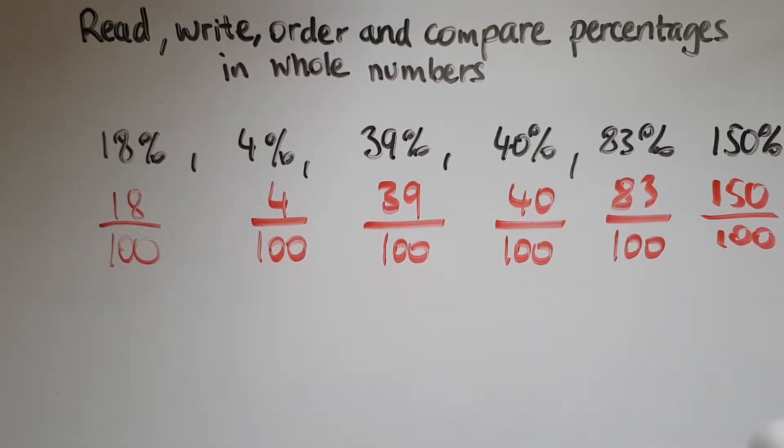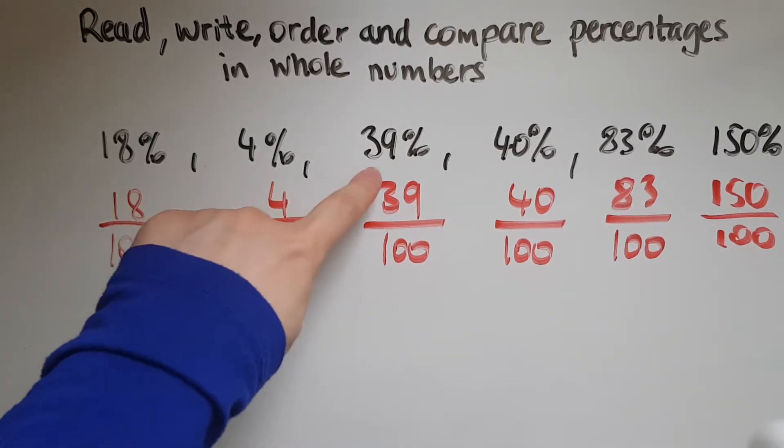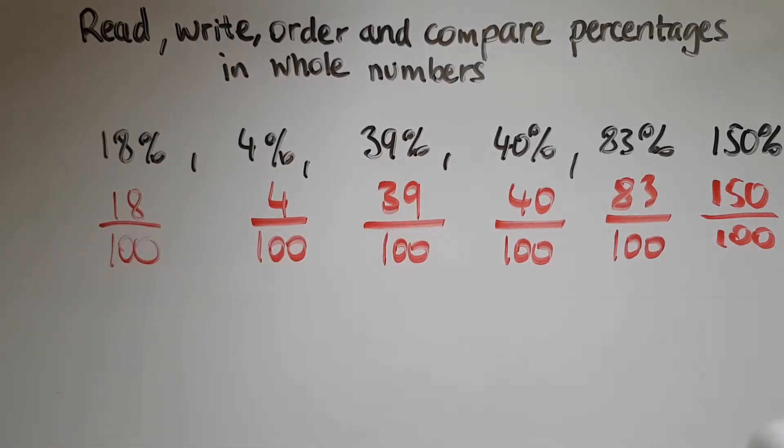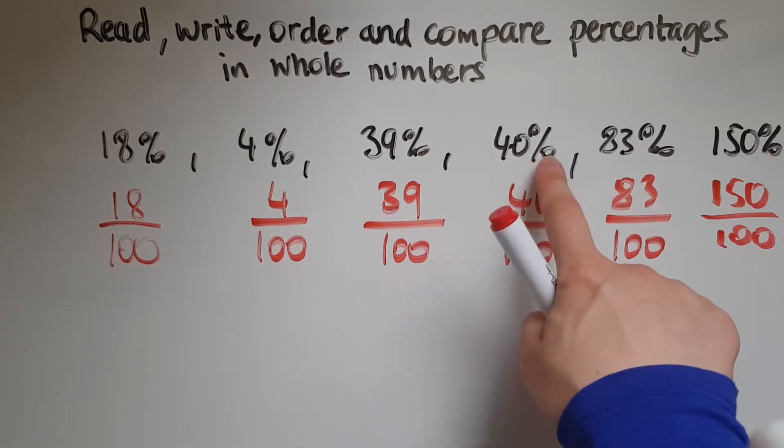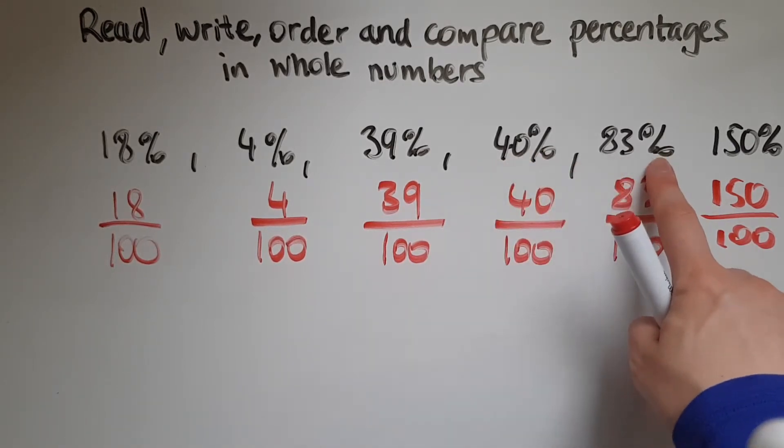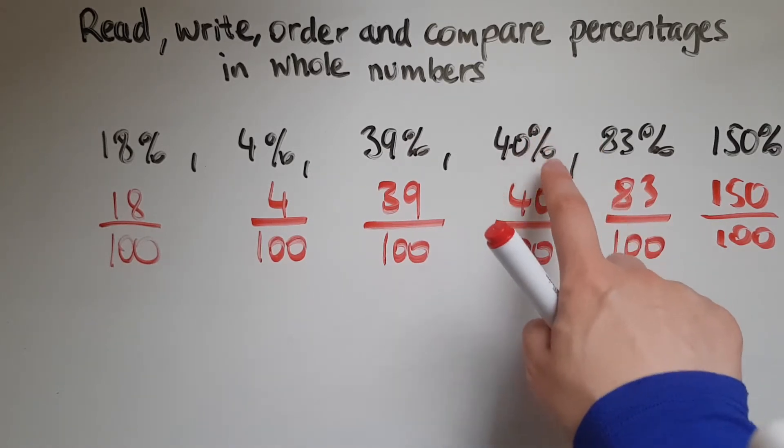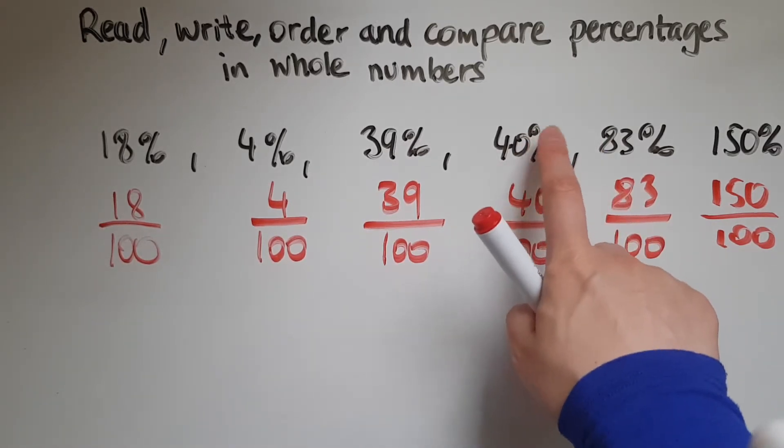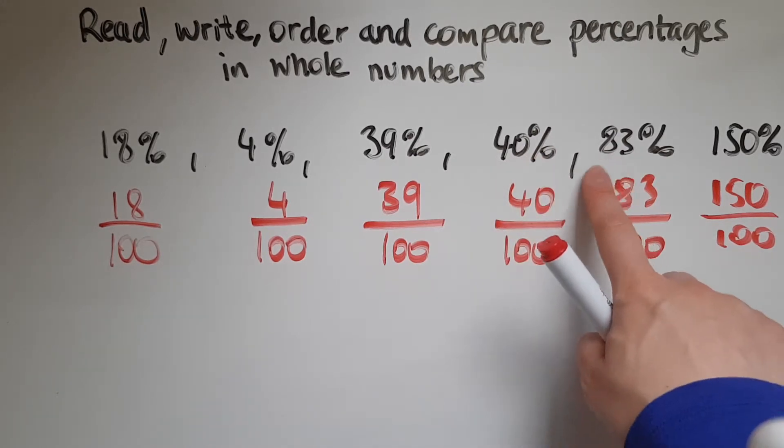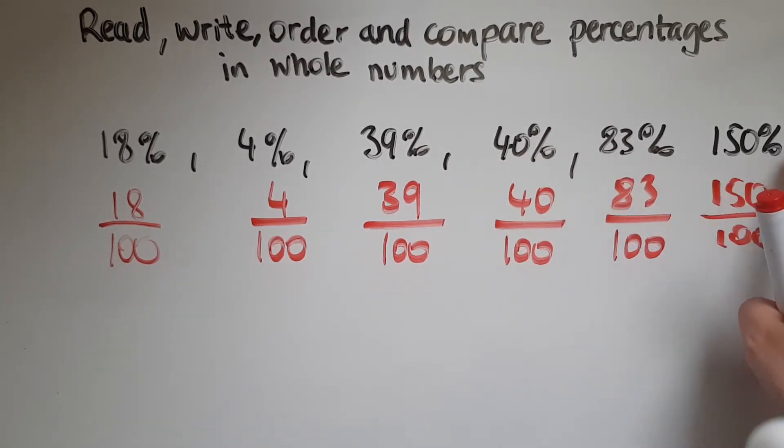Now if this is how I write them, 18 percent, 4 percent, 39 percent, and that's how we read them as well. So 40 percent, that's the percentage symbol with a slash and the two circles. 83 percent, 150 percent.